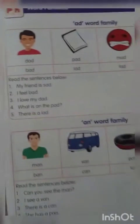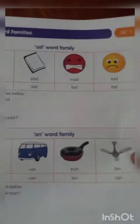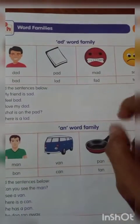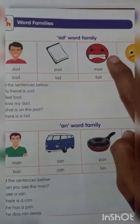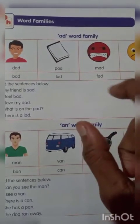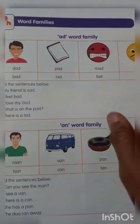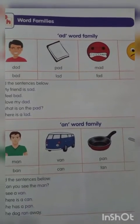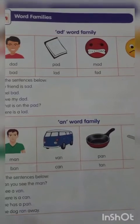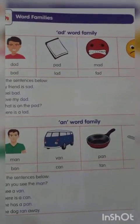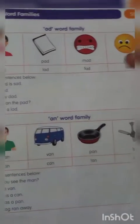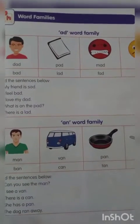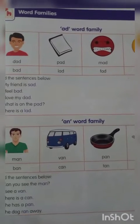Next, we learned about word families. AD word family — the word ends with AD, it's just like a rhyming word. For example: dad, bad, mad, sad, tad, lad. These meanings I already taught, right children?